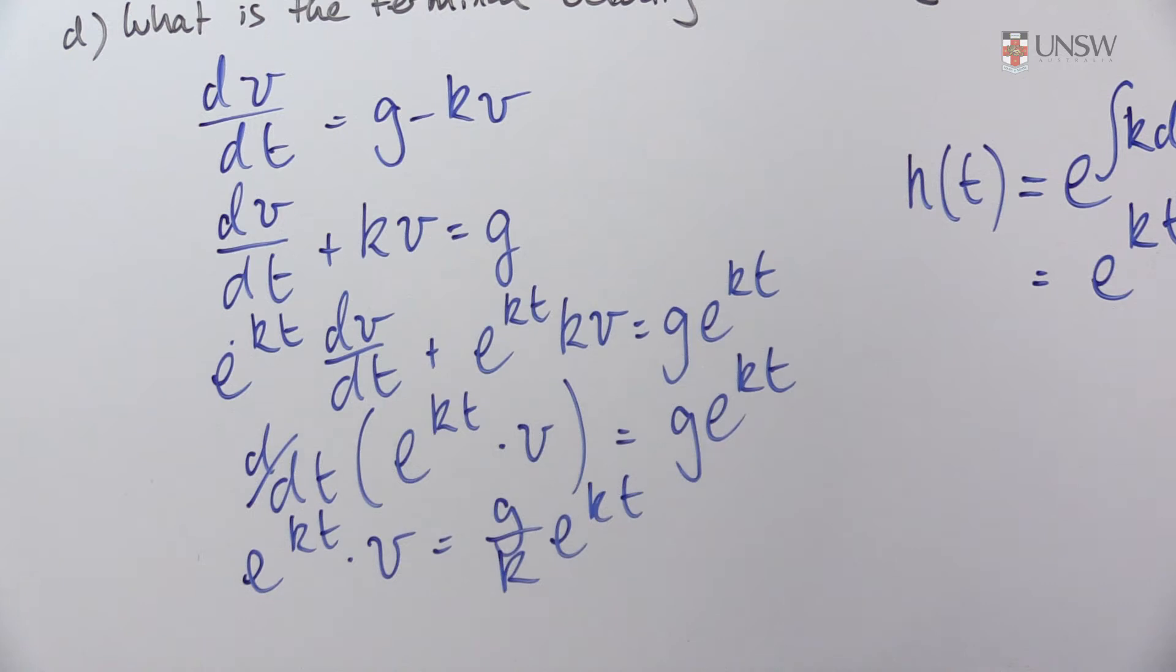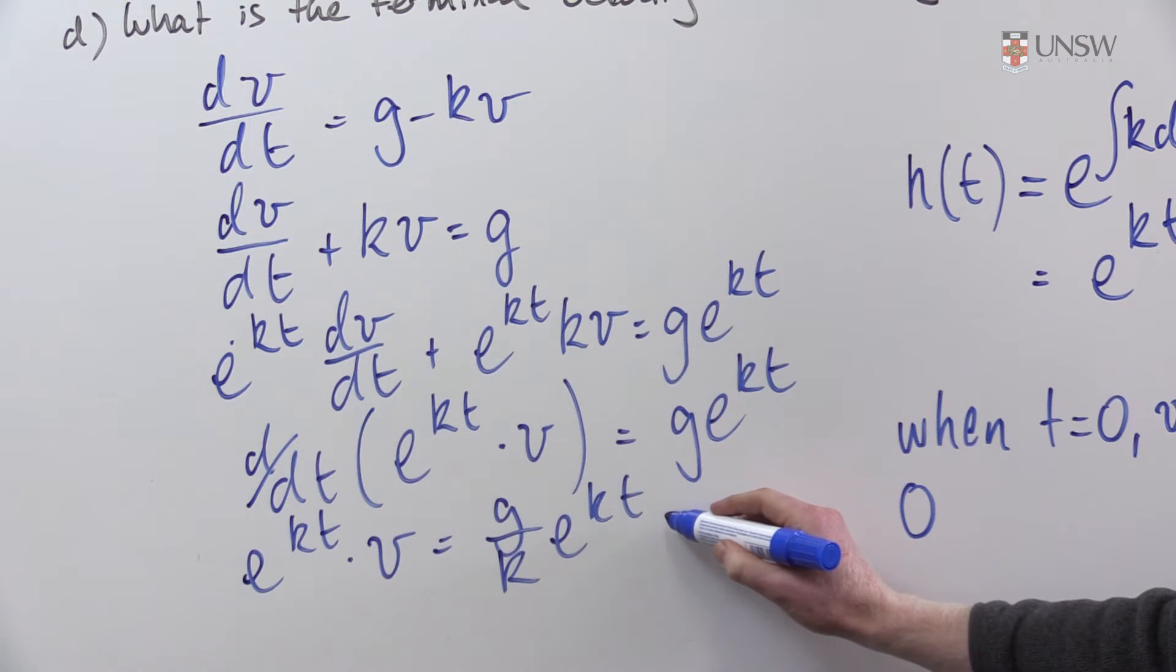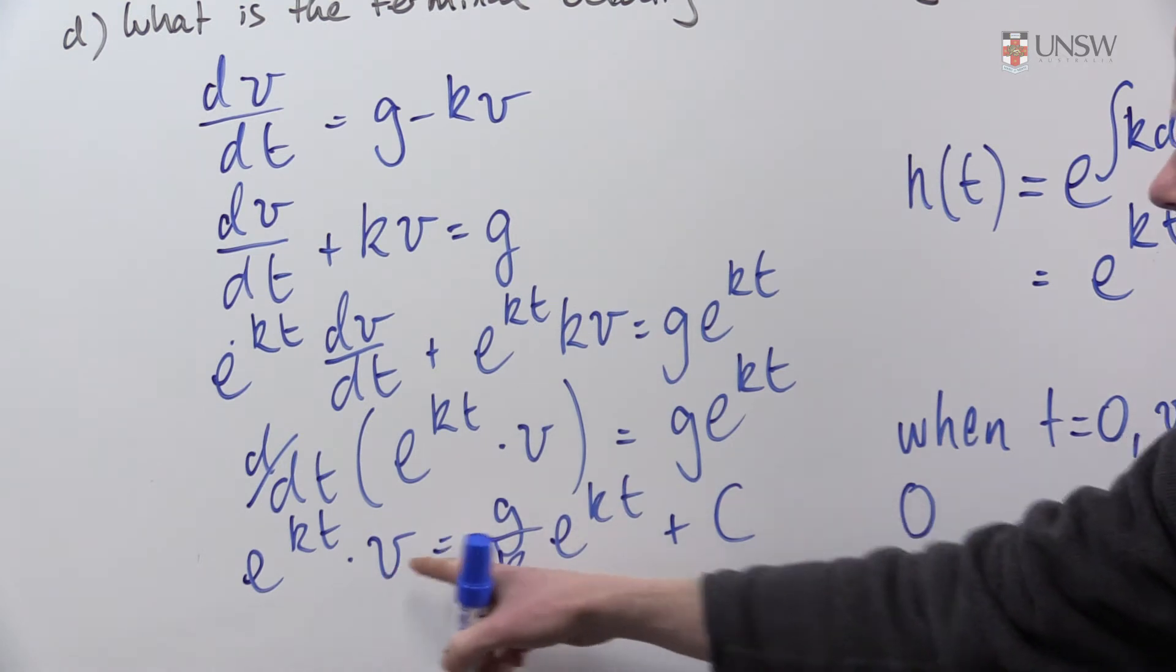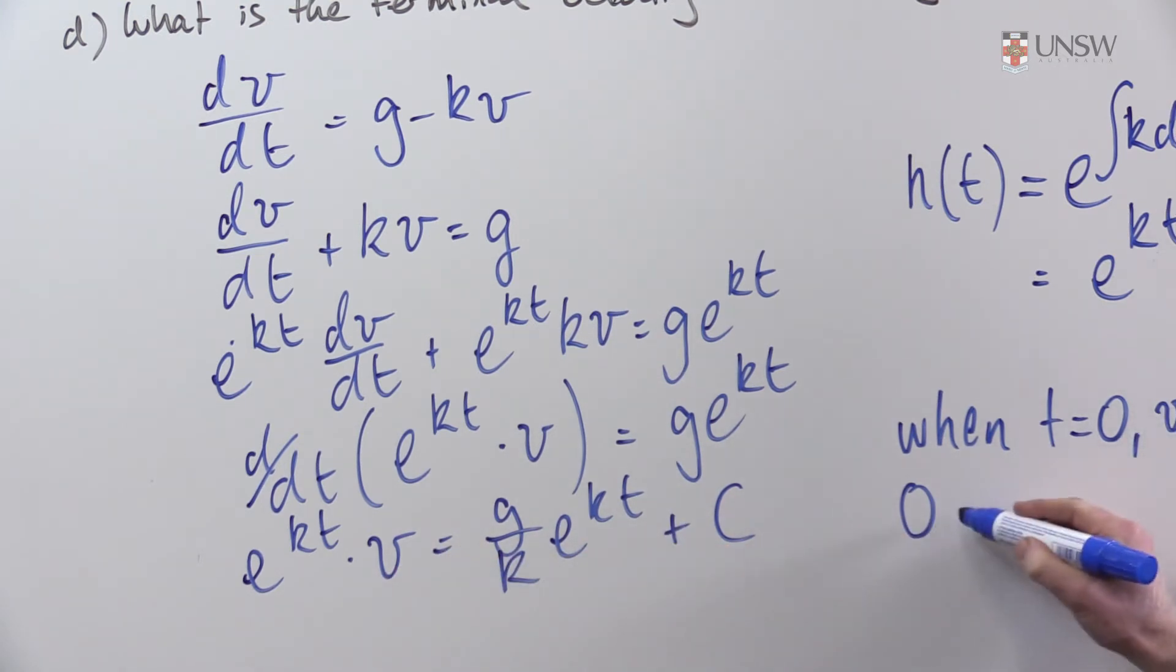We have to use our initial conditions. Our initial condition is that when t is zero, the velocity is zero. I'm going to substitute this information into my differential equation. On the left-hand side, I have zero. I forgot my constant of integration here, that's what we're solving for. On the left-hand side, I have zero; e to the power of zero is one, so I have g/k plus c. That gives me a value of c equals minus g/k.